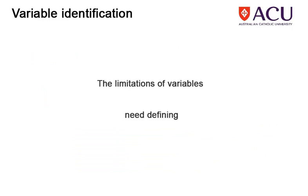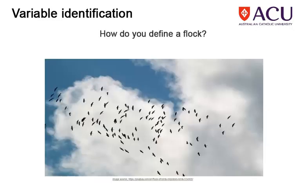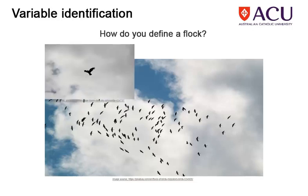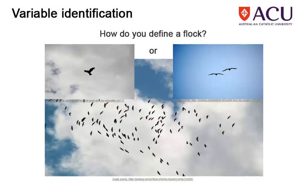For some variables, the limitation of the variable will also need to be defined. For example, if we were measuring the number of birds in flocks, do we consider a single bird flying across the sky to be a flock? How about a pair of birds?